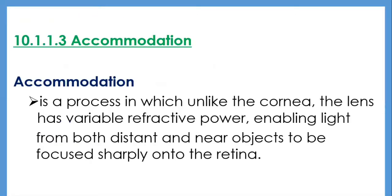Accommodation is a process in which, unlike the cornea, the lens has variable refractive power, enabling light from both distant and near objects to be focused sharply onto the retina. Cameras usually have lenses of fixed focal length — focusing depends on adjusting the distance of the lens from the focal plane. The refractive power of the eye is varied by changing the shape of the lens. When distant objects are viewed, the lens assumes a flat disc shape; when near objects are viewed, the lens is fatter and rounder with greater refractive power, as shown in Figure 10.4.